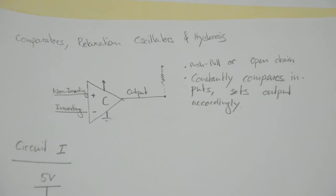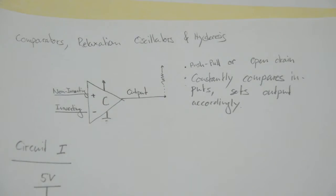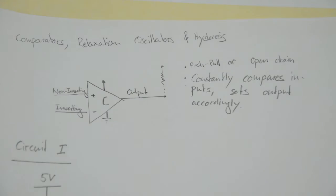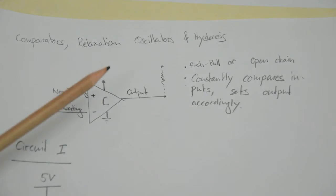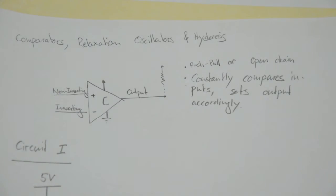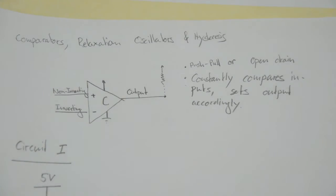A comparator is a component that has two inputs and one output. You usually use this symbol here, which looks like an operational amplifier. I usually put a C in there just to denote that this is a comparator and not a regular op-amp. You provide a supply voltage and the comparator keeps monitoring both inputs and outputs a logic high if and only if the non-inverting input has higher voltage than the inverting input.